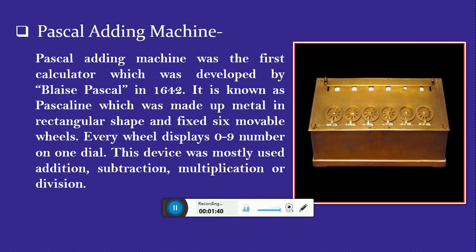The next device is the Pascal Adding Machine. The Pascal Adding Machine was the first calculator, which was developed by Blaise Pascal in 1642. It is known as the Pascaline, which was made of metal in a rectangular shape and had six movable wheels. Every wheel displays zero to nine numbers on one dial. This device was mostly used for addition, subtraction, multiplication, and division.